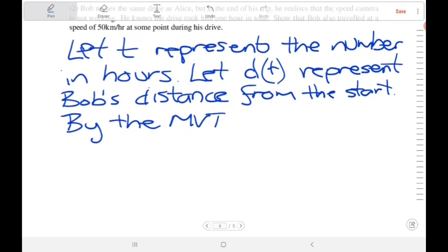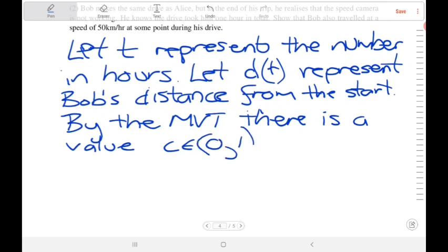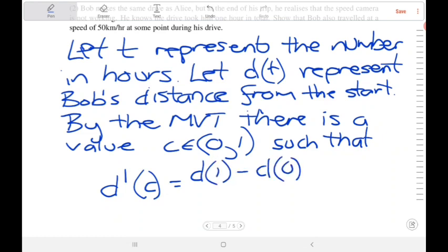That means, according to the mean value theorem, there is a point C in our interval, which in this case is 0 to 1, such that the derivative at C is the value of d(1) minus the value of d(0) divided by 1 minus 0. This is our interval A, B. It's divided by B minus A.